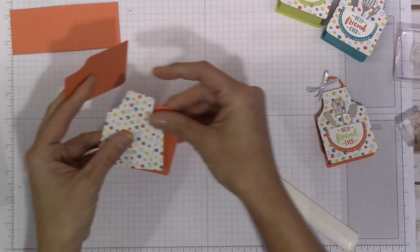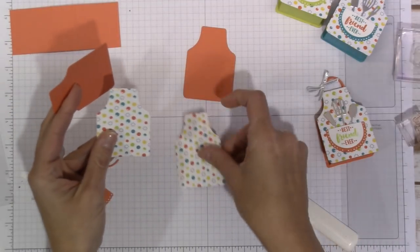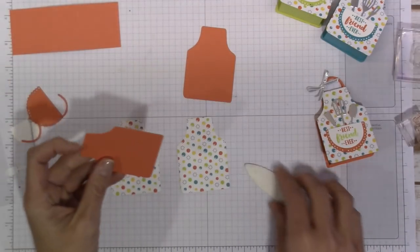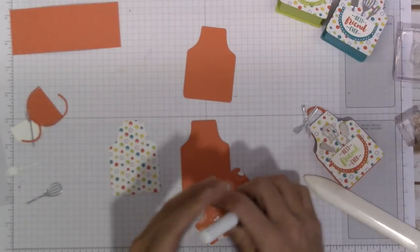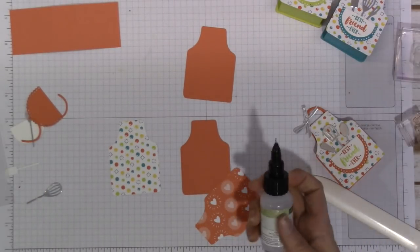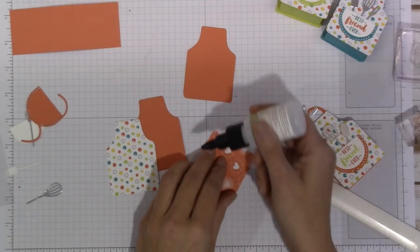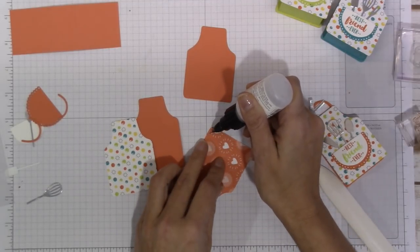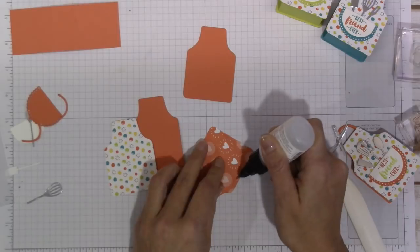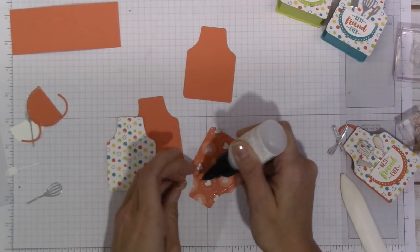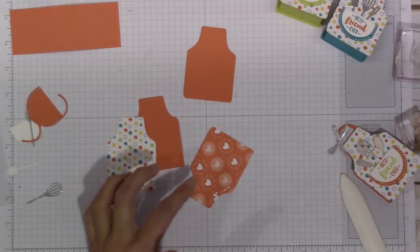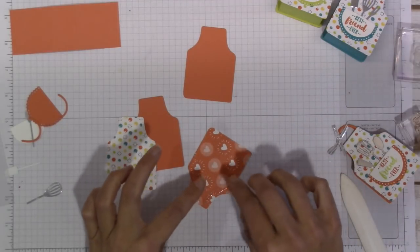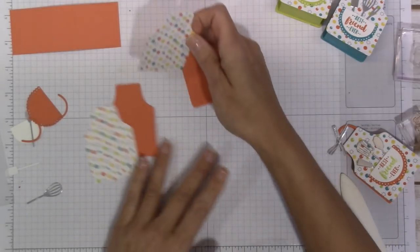And then I'm going to go ahead and I'm going to adhere my two little apron pattern paper onto the cardstock. And I decided for this project to go ahead and pull out my fine tip glue pen for this. So I'm just going to put a fine little line of adhesive all the way around the edge and I'm going to attach both of these pieces to the coordinating cardstock.